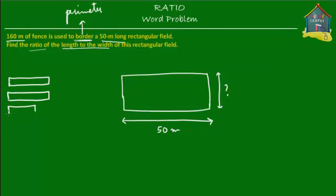The perimeter is 2 times the length plus 2 times the width. So if this is the length and this is the width, this is the length and this is the width, then the perimeter is the sum of all four sides.